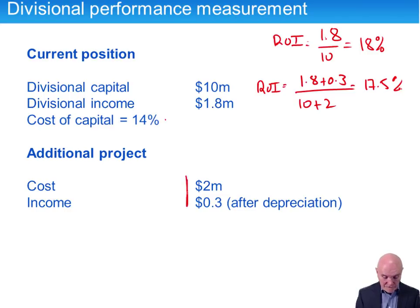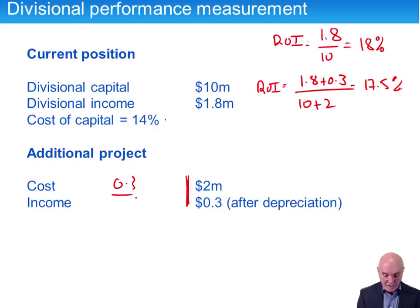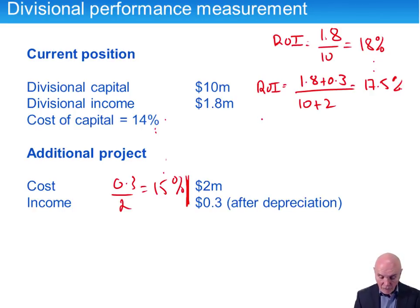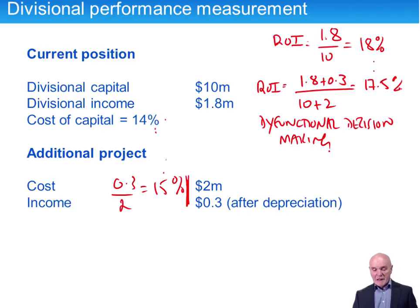Here's the big dilemma: this investment is actually a worthwhile one. We are getting 0.3 on 2 million, which is 15% — above the 14% cost of capital. This would yield a positive net present value. Yet this manager is saying no. We have here a lack of goal congruence, or what might be called dysfunctional decision-making. The manager is doing something which is good for the division, but which is bad for the group.